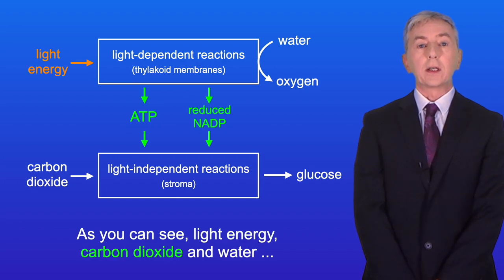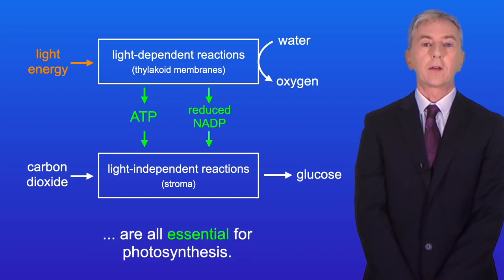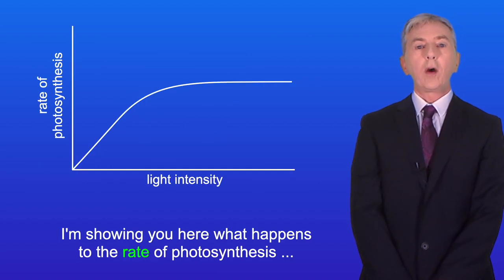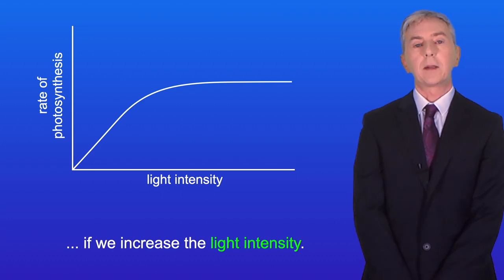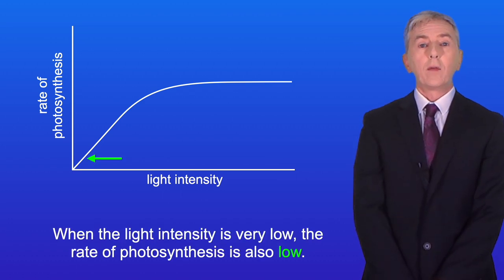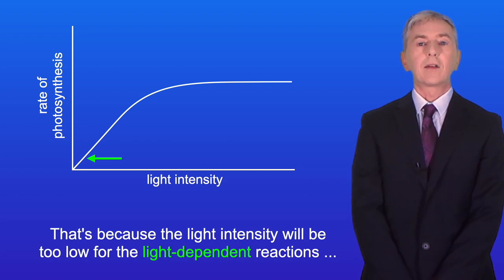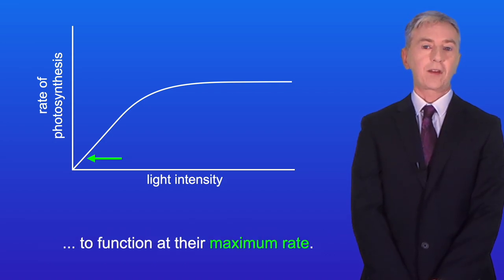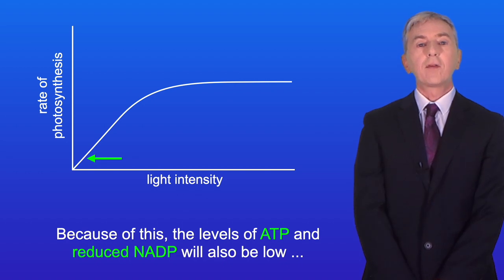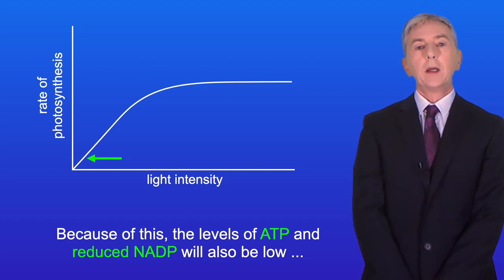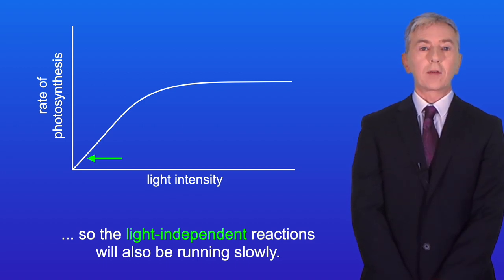Light energy, carbon dioxide and water are all essential for photosynthesis. When the light intensity is very low, the rate of photosynthesis is also low, because the light intensity is too low for the light-dependent reactions to function at their maximum rate. Because of this, the levels of ATP and reduced NADP will also be low, so the light-independent reactions will also be running slowly.